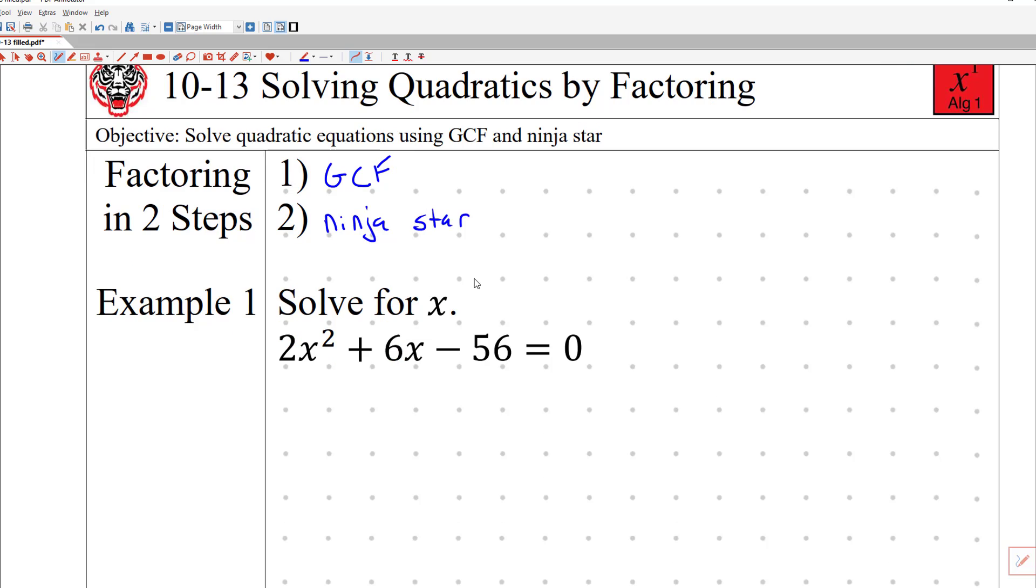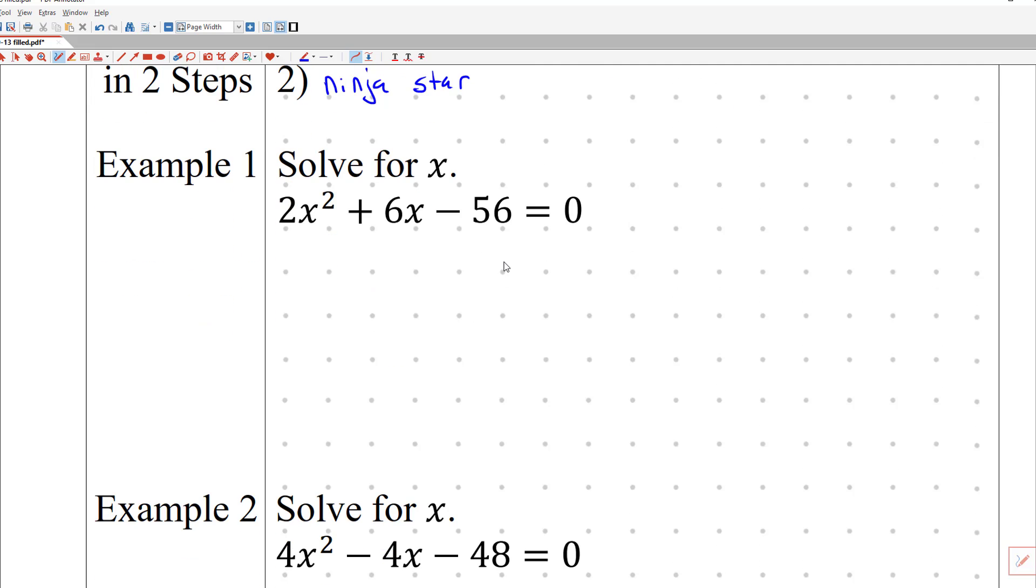Let's go ahead and jump into one of these examples. So first step, what is the greatest common factor? Your hint for all of today's homework is the greatest common factor is going to be the leading coefficient of your quadratic term in this x squared term. So the greatest common factor in this case is two. So if I factor out that two, what is left over?